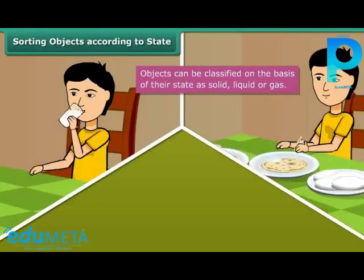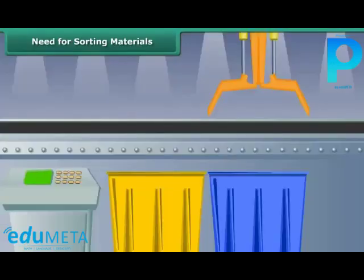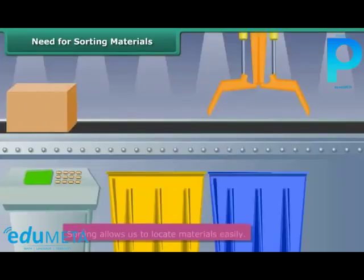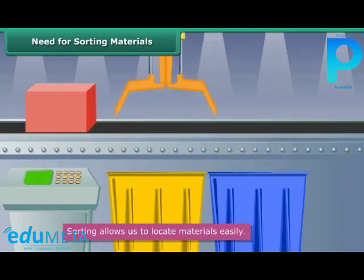Thus it is clear that all the objects that we see around us or use in our daily life can be classified into one of three categories: solid, liquid, and gas. We have been looking at the different bases for classifying objects, that is, materials.